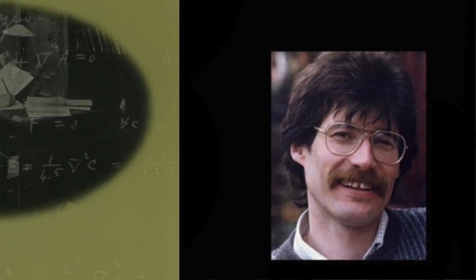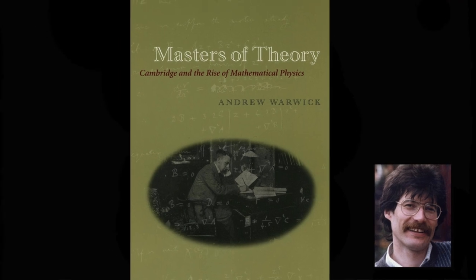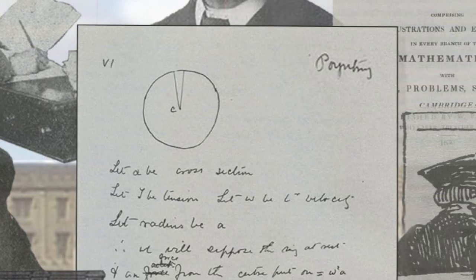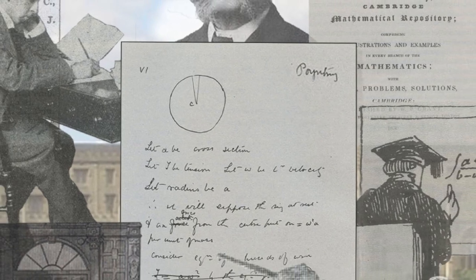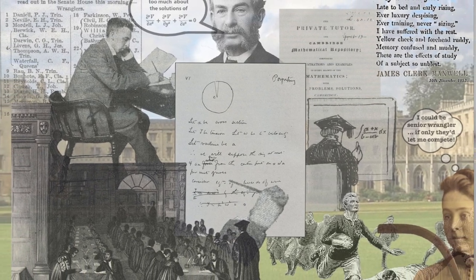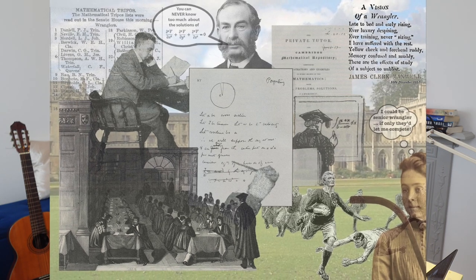That work was published as Masters of Theory — and that's me around the time I began the project. In Masters of Theory, I explained Poynting's work very differently. I've remade it here as a one-page graphic novel. In the middle is an exam script written by the 24-year-old Poynting in Cambridge Senate House in 1876. He's working in real time, making mistakes, crossing things out, reconceptualising before our eyes. No logical certainty, no neat derivation.